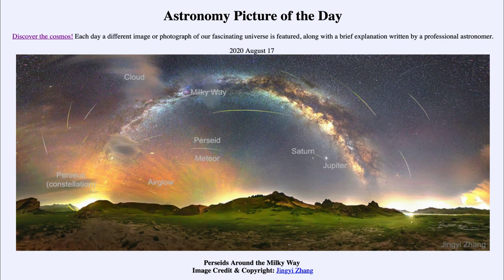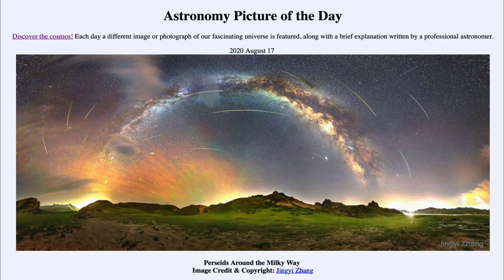So here we get to see a number of those things in the same image — our picture for today, August the 17th of 2020, titled Perseids Around the Milky Way. We'll be back again tomorrow for the next picture, previewed to be a solar system prototype, so we'll see what that is about tomorrow. Until then, have a great day everyone, and I will see you in class.